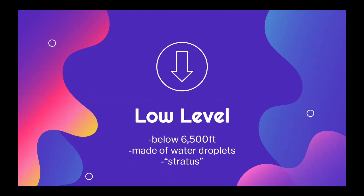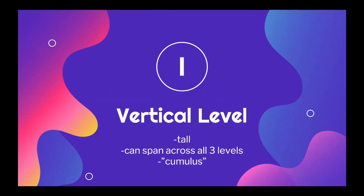Next we have the low level, which describes clouds below 6,500 feet. In contrast to high level clouds, the low level is usually made of water droplets. These clouds have stratus in their name. And finally, vertical level clouds. These clouds are usually tall and span throughout the other three main levels. These clouds usually have the word cumulus in their name.